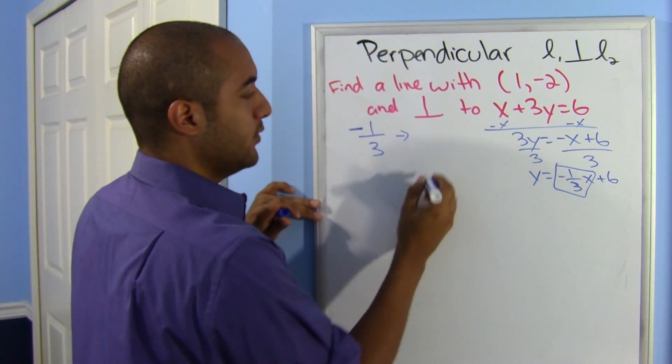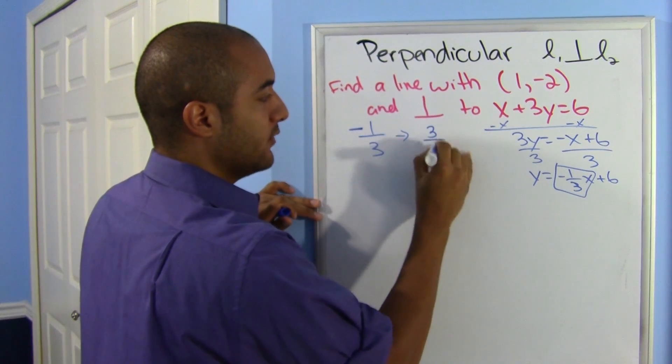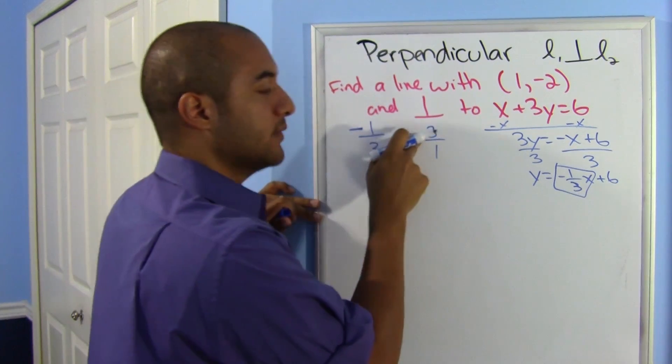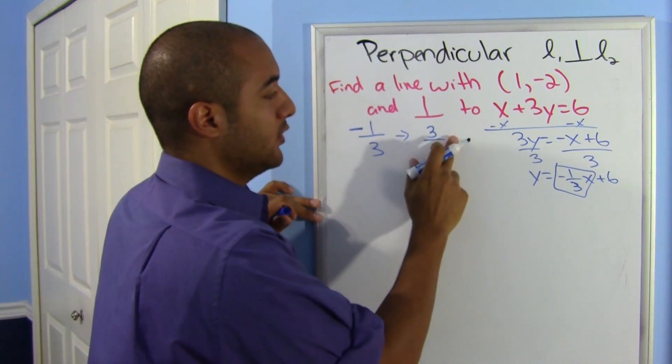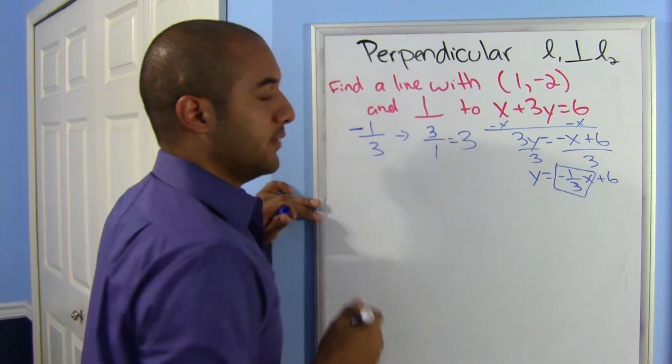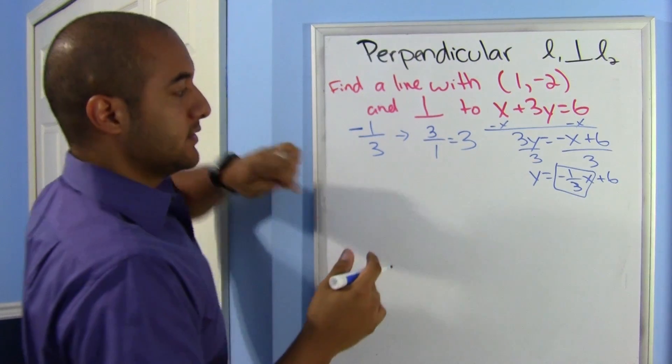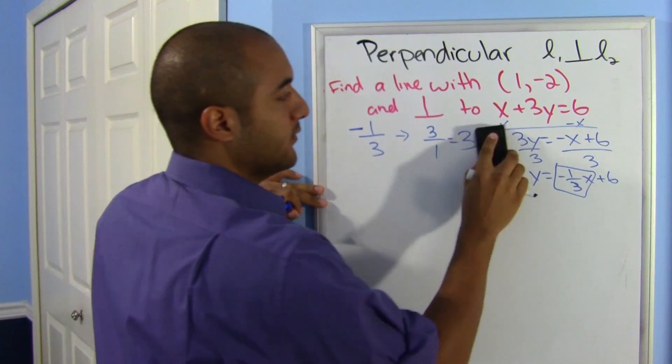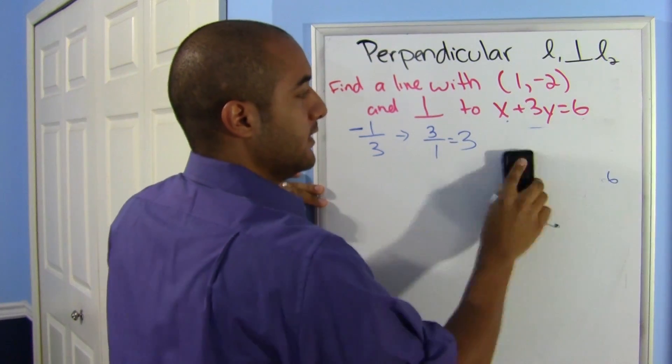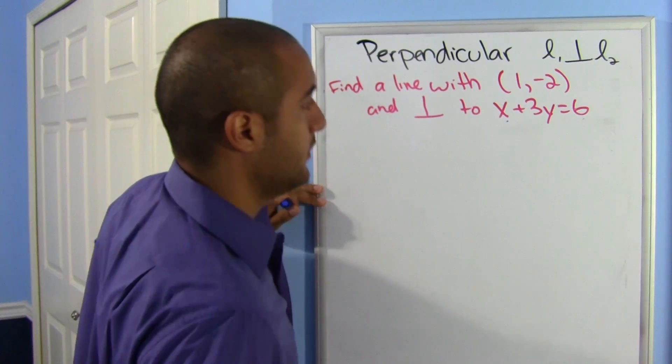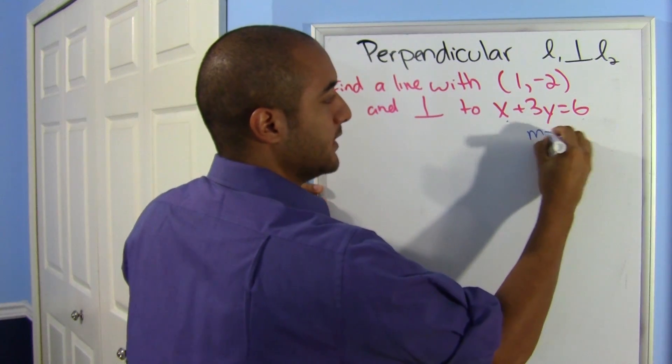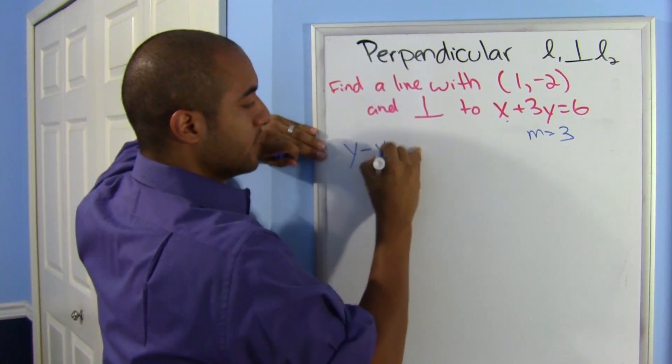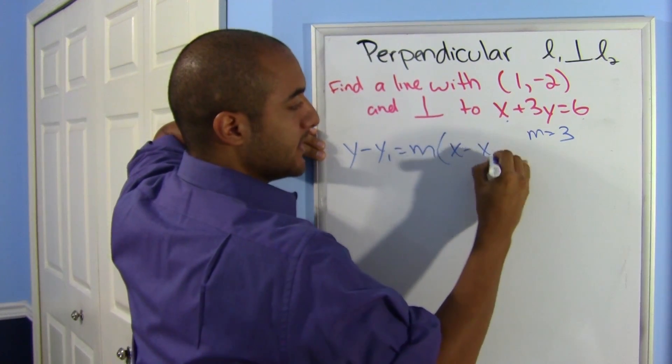Its negative reciprocal would be 3 over 1, and since this was a negative, this one has to be a positive. Or you could just leave it as 3. Now I have a slope and I have a point, so just as before, I'll be using the point-slope form. Okay, let me make some room. I know my new slope is 3, so y minus y1 equals m times x minus x1.